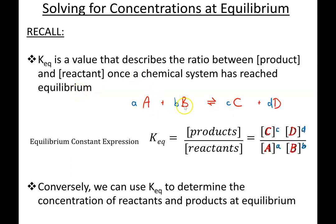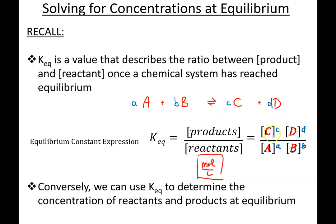For this generic equation A + B produces C + D, I can create its equilibrium expression by placing the concentrations of C and D in the numerator and the concentrations of A and B in the denominator. Concentration is always measured in moles per liter. By balancing the equation we arrive at coefficients which we write as exponents in the equilibrium expression. Punching these values into a calculator gives us the Keq value.